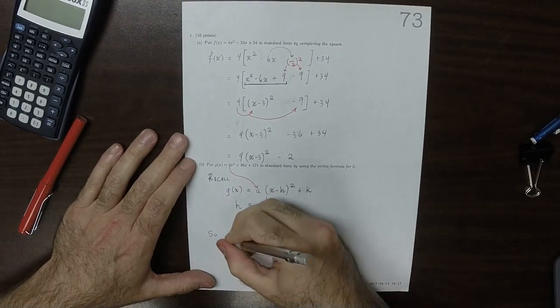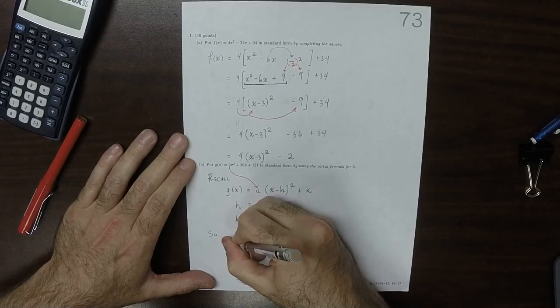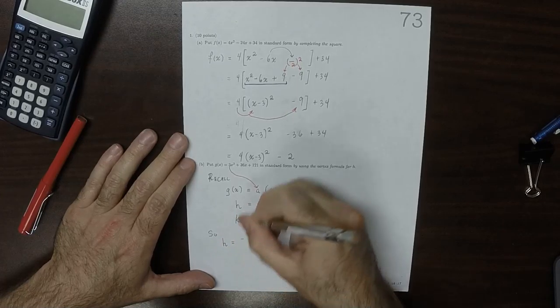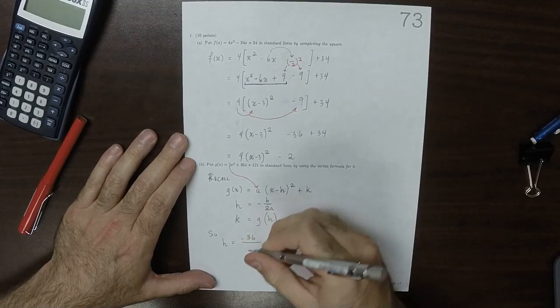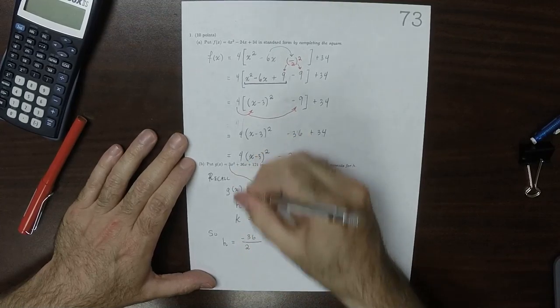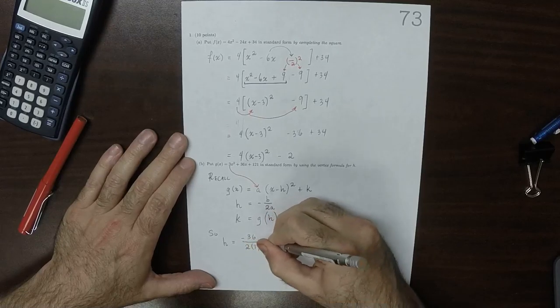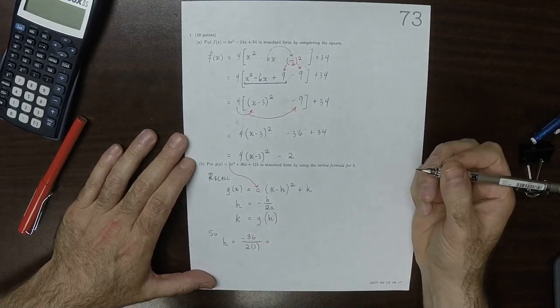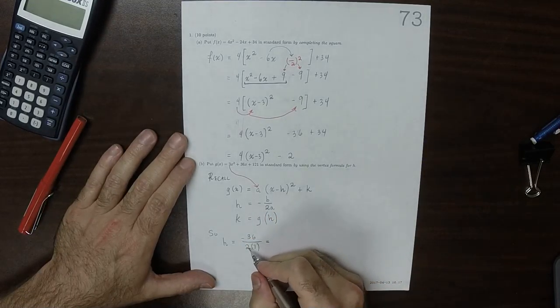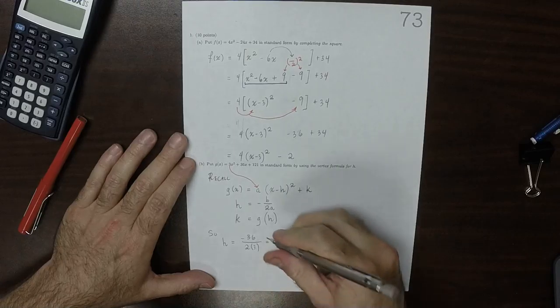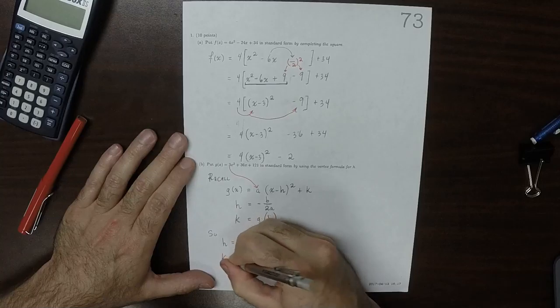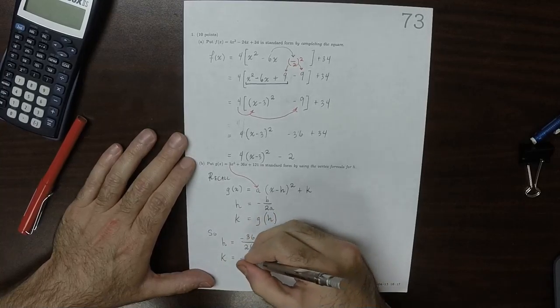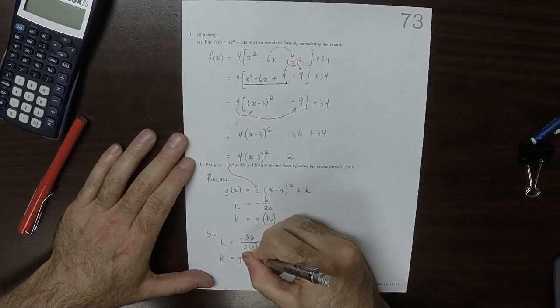So on this specific example, h is negative 36 over 2 times 3, so that is 36 over 6, which is 6, so negative 6. Then k is what we get when we plug in negative 6.